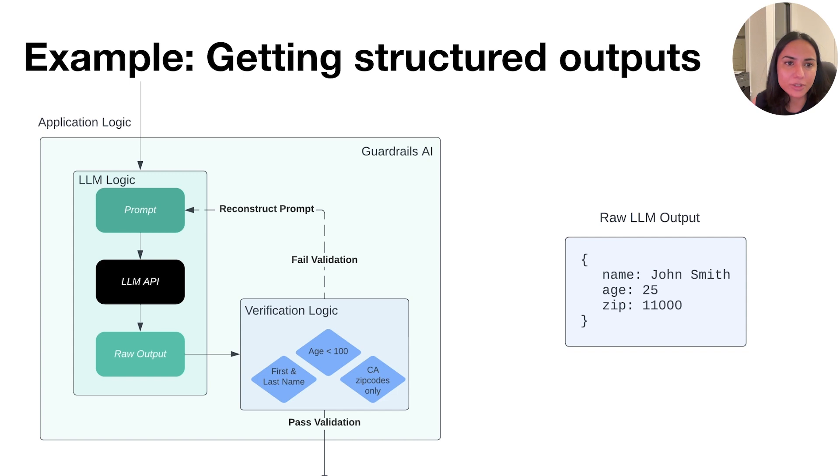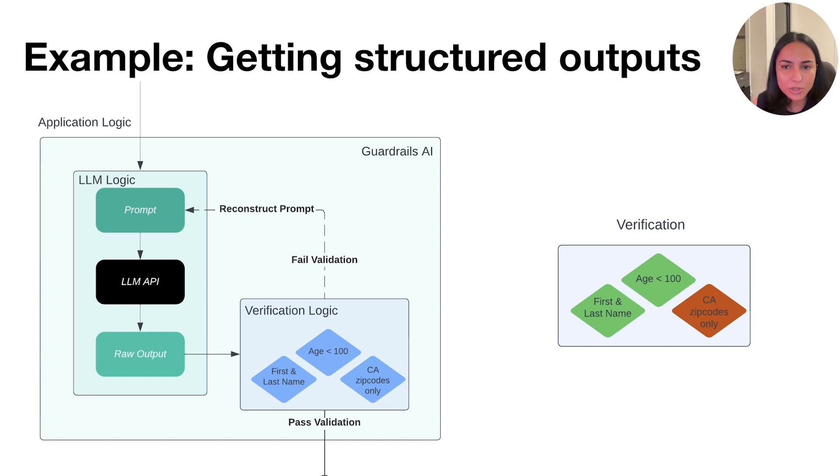This prompt is sent to the LLM, and let's say that we end up receiving the following output, where name and age are something, but then we also get the zip code that is incorrect.